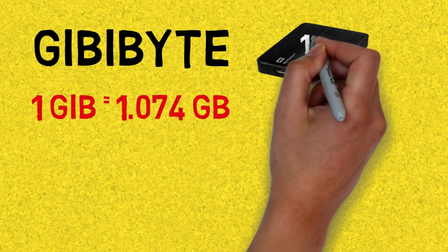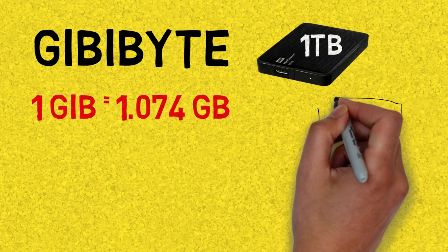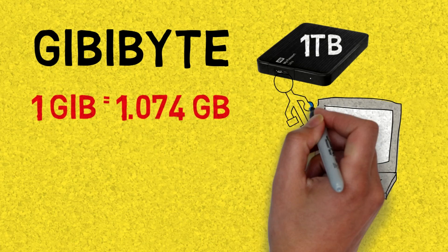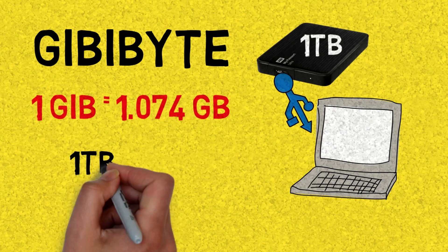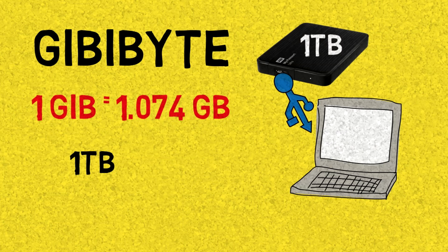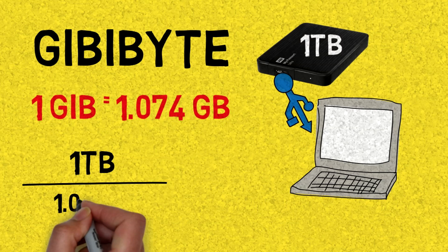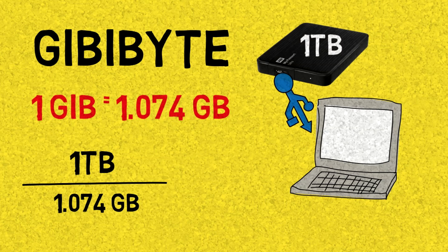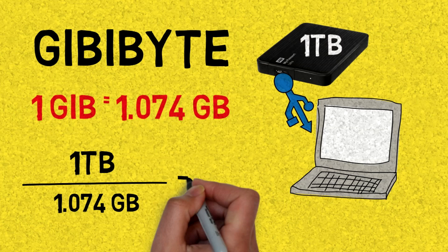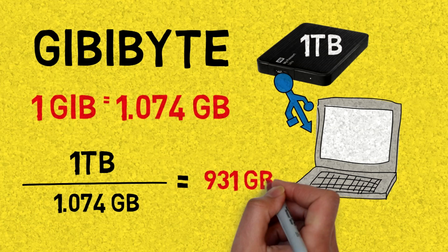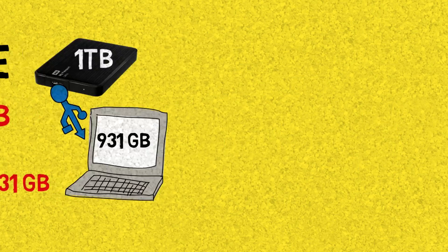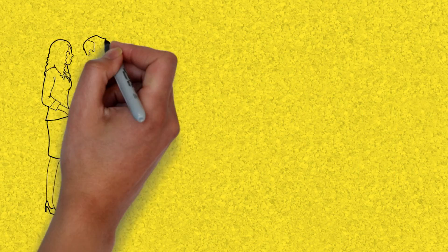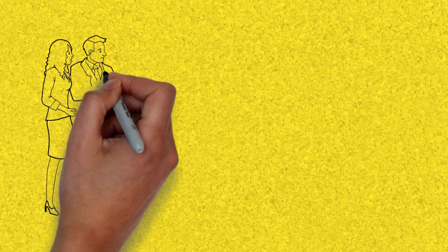If you take a one terabyte drive and plug it into a computer, a conversion happens. That one terabyte needs to be divided by 1.074, and you can see that equals 931 gigabytes — and that's actually what you get to use. Marketers use that different system deliberately, since most people don't know it.